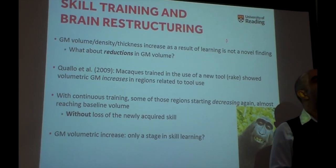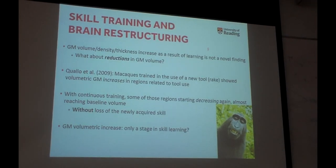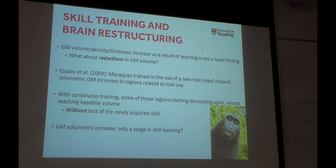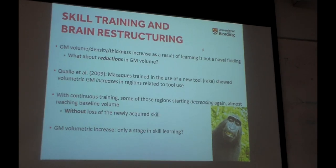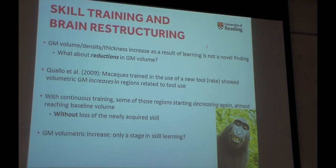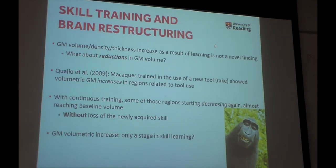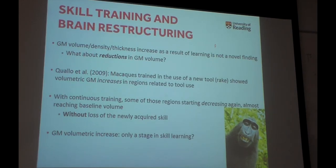What do all these things mean? Why does the structure of the brain change? Changes in the volume, density, or thickness of the gray matter as a result of learning is not a very novel finding. You might be familiar with studies saying London taxi drivers have big hippocampi because the hippocampus is good for navigation, or that jugglers have bigger motor cortices because of fine coordination, big cerebellum — all these things.